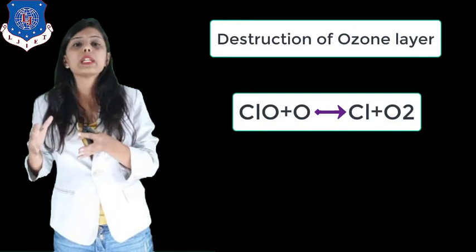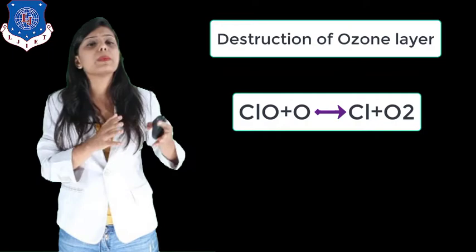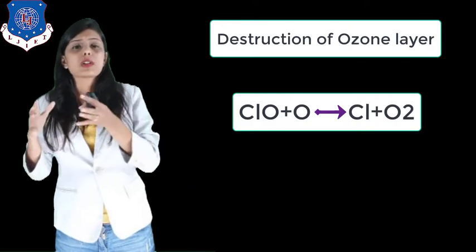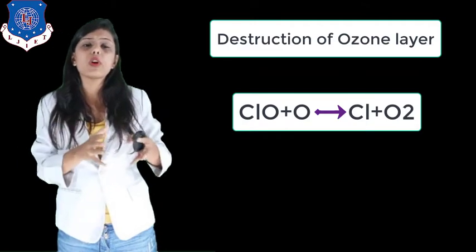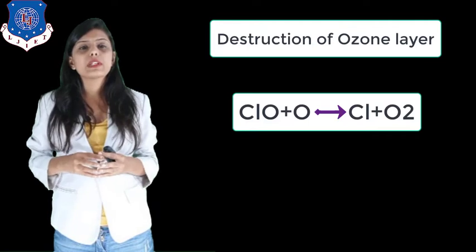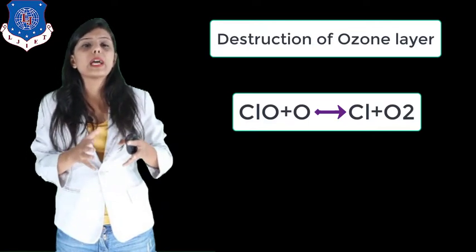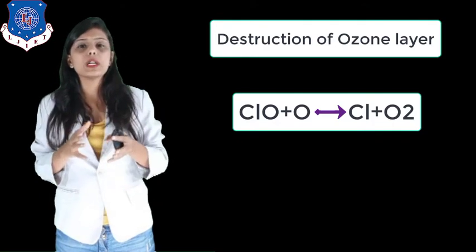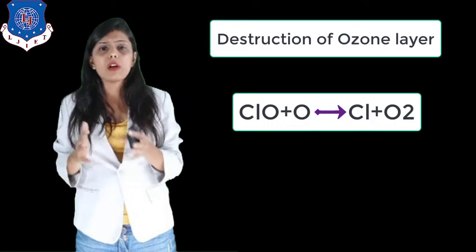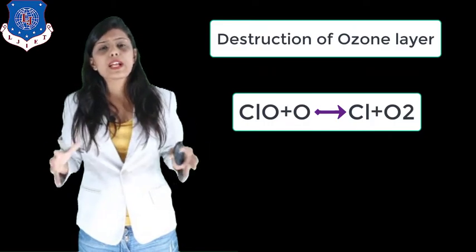Then chlorine monoxide reacts with atomic oxygen and produces chlorine plus oxygen molecule. The oxygen atom hits the chlorine monoxide molecule. Chlorine monoxide reacts with atomic oxygen and produces chlorine plus oxygen molecule. You can easily see that chlorine is separated again from the reaction.